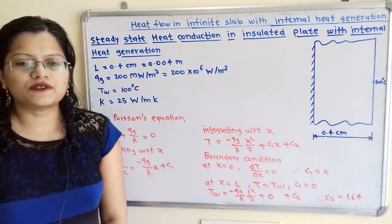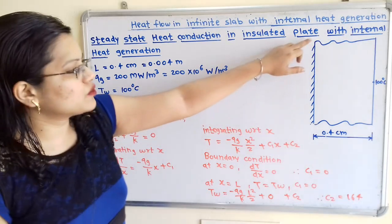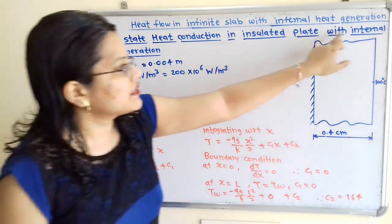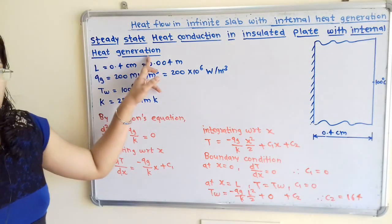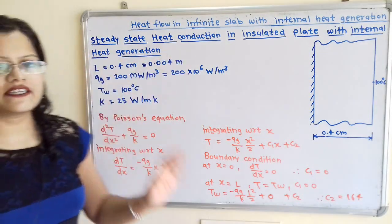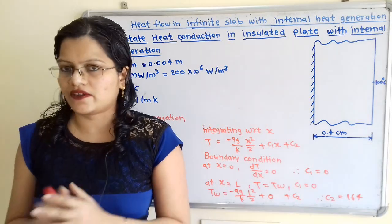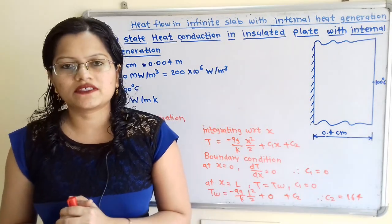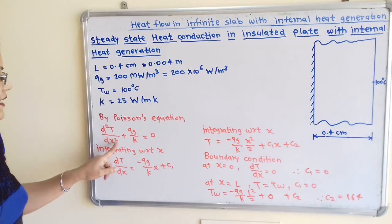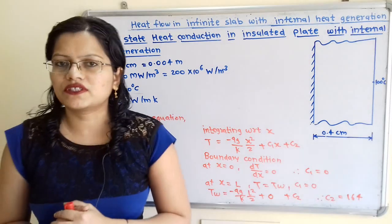Now, if we observe the condition, the plate is insulated at one side but with internal heat generation. Whenever there is internal heat generation, we have to use the Poisson's equation. The Poisson's equation is: d squared T by dx squared plus QG by K is equal to 0.